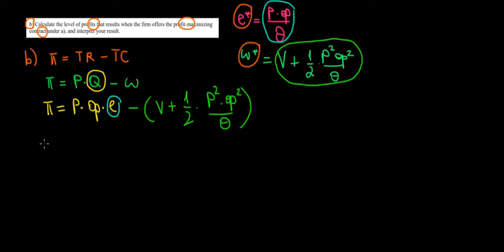Now the profit is going to be equal to profit equals P times theta times, now instead of the effort level, we are substituting it, we're substituting P times theta times theta divided by theta. That is our effort level minus.